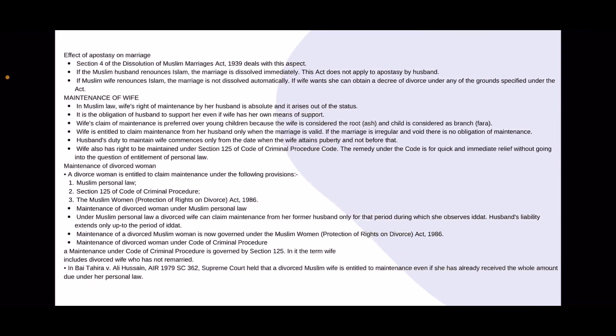Effect of apostasy on marriage: Section 4 of the Dissolution of Muslim Marriages Act 1939 deals with this. If the Muslim husband renounces Islam, the marriage is automatically dissolved. However, if the Muslim wife renounces Islam, the marriage does not automatically dissolve — she may file for a decree of divorce based on the grounds under Section 2.